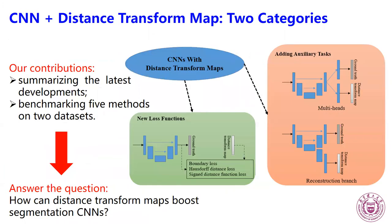This work has two main contributions. We first summarize the latest developments of the combination between CNN and DTM, and classify them into two categories based on their main motivation: new loss functions and adding auxiliary tasks.